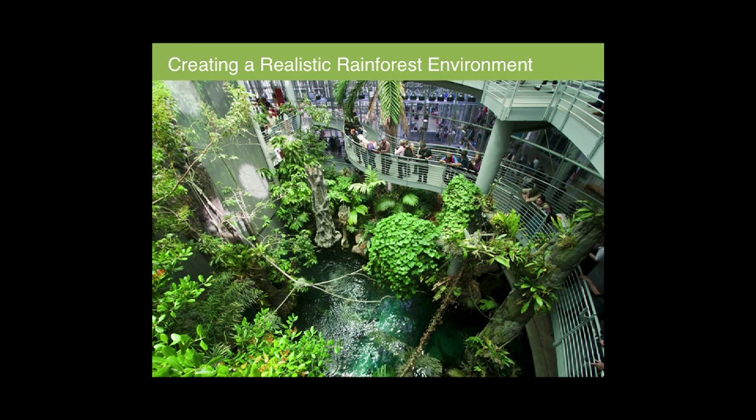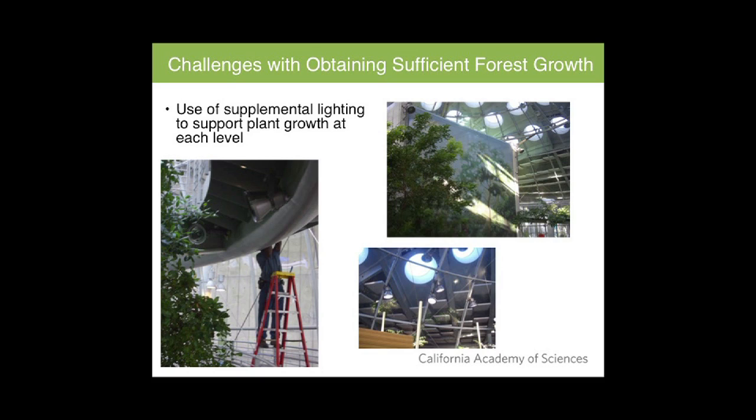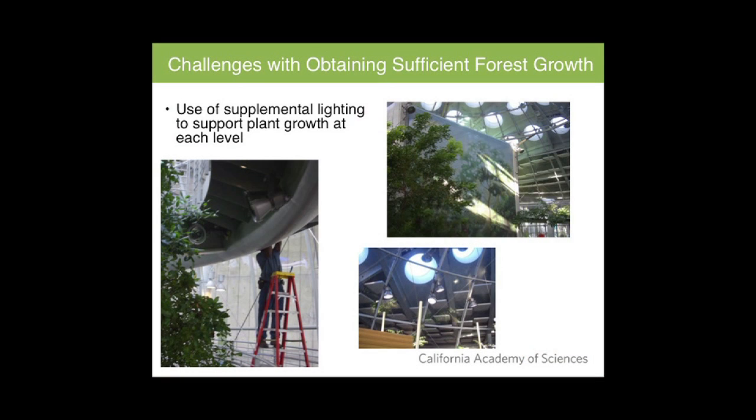Another challenge in creating this forest is the use of supplemental lighting to support plant growth at each level. Sunlight comes in through skylights, but we moved away from blanket lighting toward focused lighting at each level. This gave the plants the light they needed, cut down on energy costs, and minimized heat generation that was compounding the vertical stratification. This involves engineers as well as veterinary staff, since it directly affects the animals in the bola.